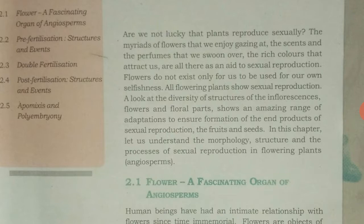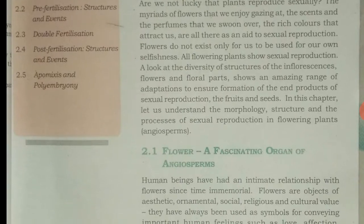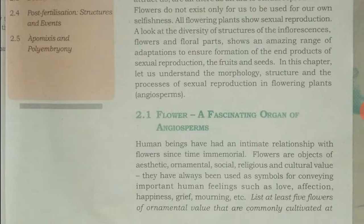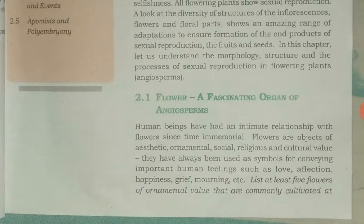In this chapter, let us understand the morphology, structure, and the process of sexual reproduction in flowering plants — angiosperms. In this chapter, we discuss about angiospermic plants. Flowers have floral parts, they sexually reproduce and form fruits and seeds. The flower is a fascinating organ of angiosperms.